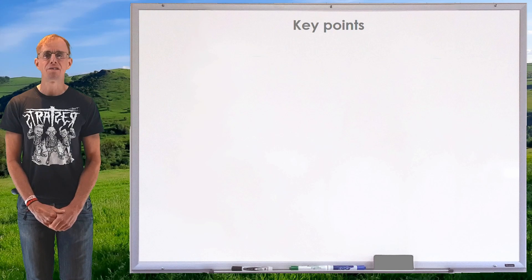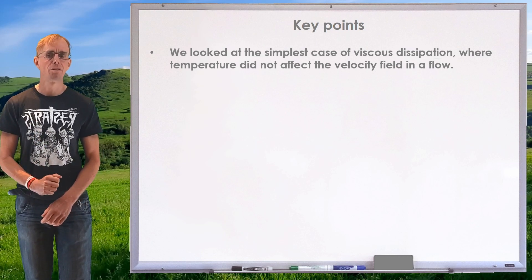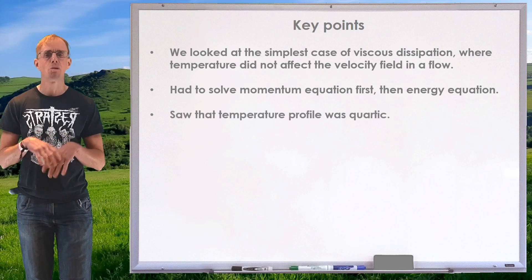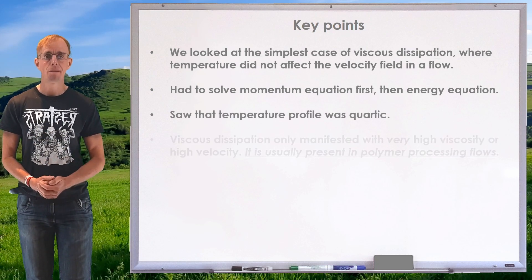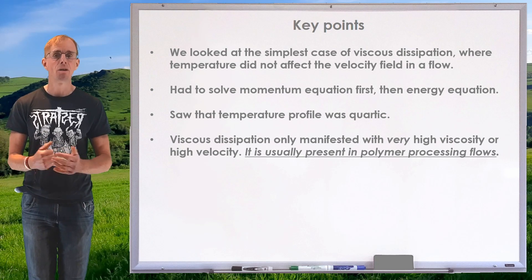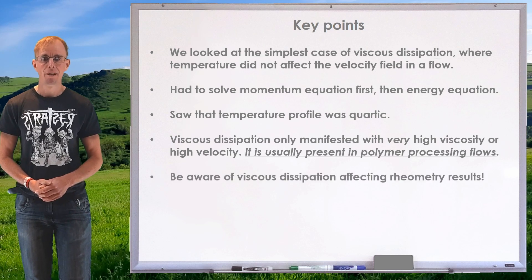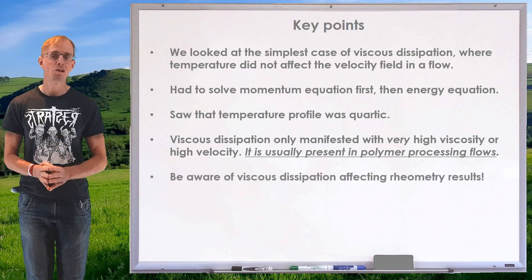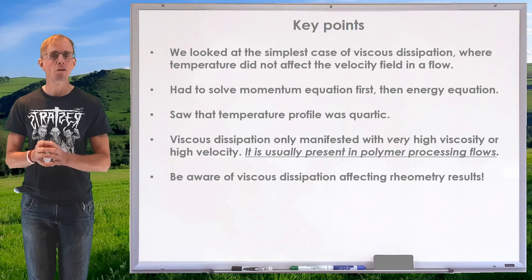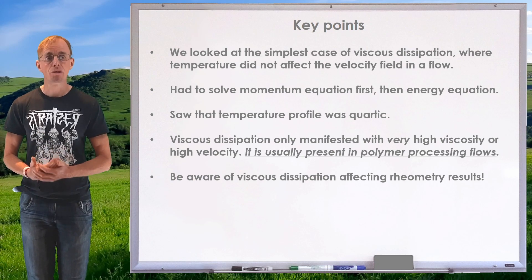To summarize this final part of Lesson 7: we looked at the simplest case of viscous dissipation where temperature did not affect the velocity field or viscosity, solving the momentum equation first then the energy equation sequentially because it was an uncoupled problem. The result was a quartic temperature profile, and we saw that viscous dissipation only manifests at very high viscosities or very high velocities — it's usually present in polymer processing flows because of the high viscosities involved. We also discussed the impact on rheometry: high-shear rheometry experiments must be conducted with awareness of whether the isothermal flow assumption is valid, and non-dimensional groups such as the Nahme-Griffith number can assist with that analysis.